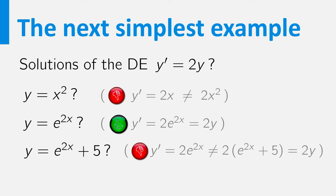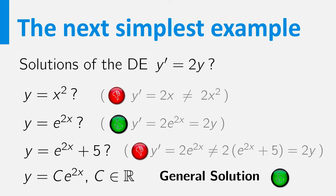No, for this equation, multiples of the solution e to the power 2x provide more solutions. The derivative of c times e to the 2x equals 2 times c times e to the 2x. In fact, all solutions are of this form. So the general solution is y equals c times e to the 2x for an arbitrary c.